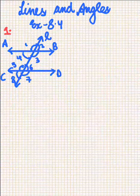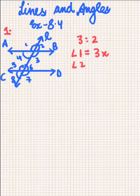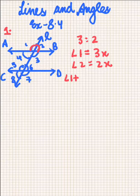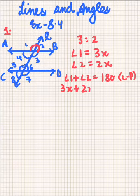Since we are given the ratio of Angle 1 and 2, we can take Angle 1 as 3x and Angle 2 as 2x. Here we can see that Angle 1 and Angle 2 are forming a linear pair. So Angle 1 plus Angle 2 will be equal to 180 degrees. Angle 1 is 3x and Angle 2 is 2x.